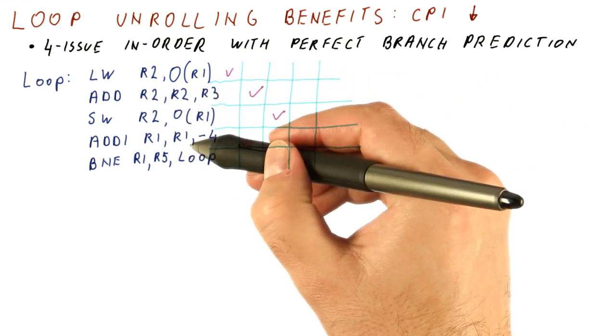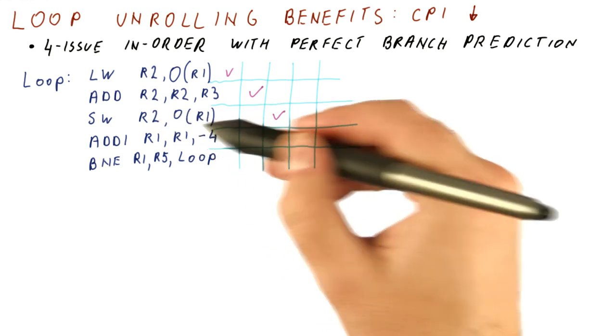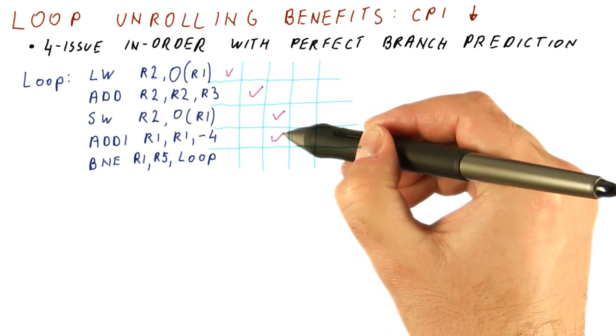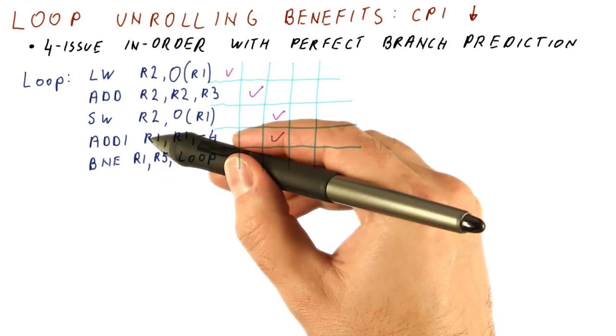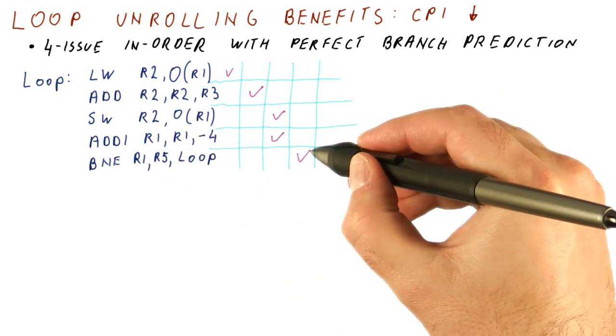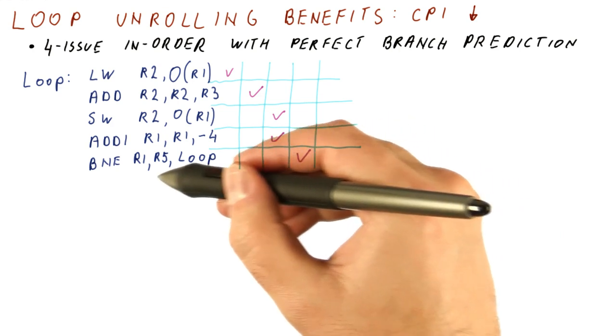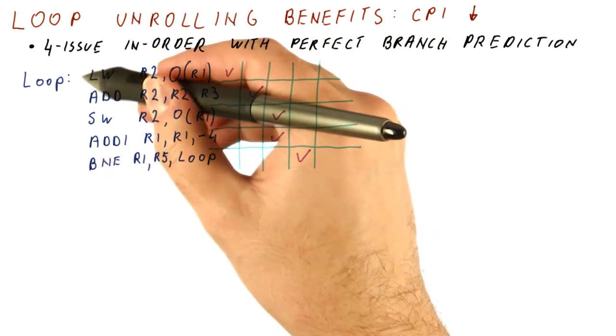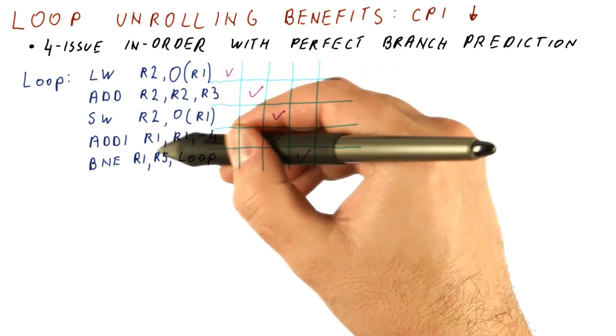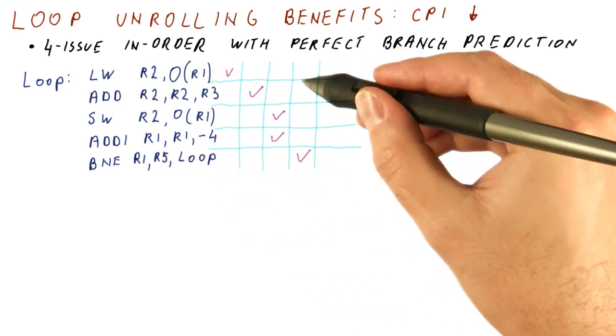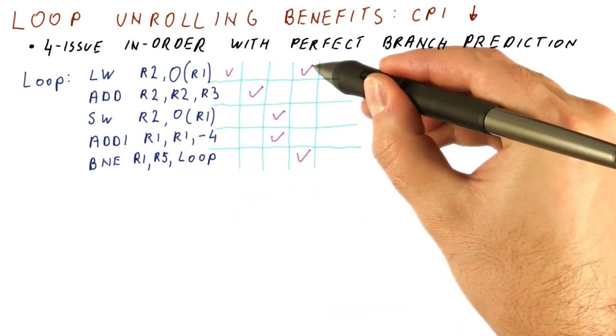The next instruction, however, does not depend on the previous one. So we can do this add here, but then for the branch, it does depend on R1, so it can be only done here. Because we have perfect branch prediction, this load has also been fetched from the next iteration, and it doesn't depend on the branch that was done here. So we will actually do the load for the next iteration.